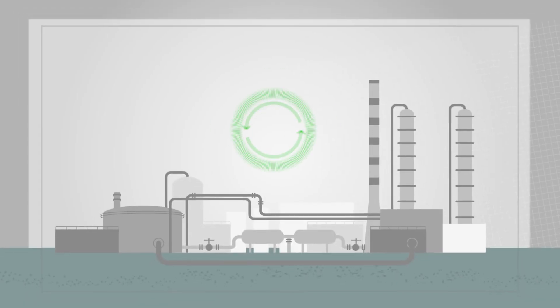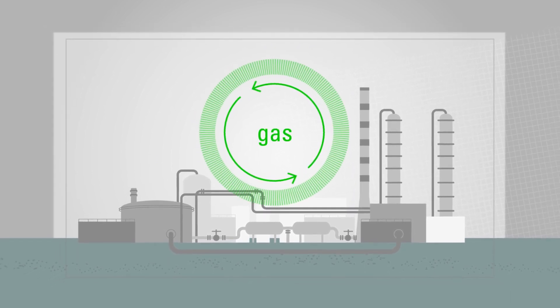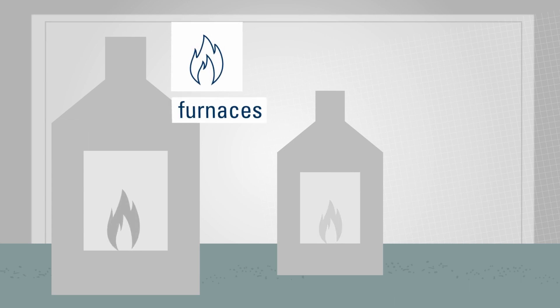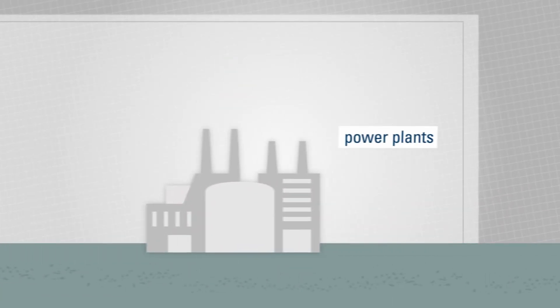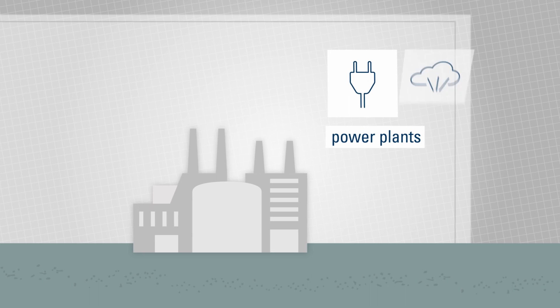The processes of a refinery produce surplus gas, and the goal is to use this gas sensibly. This is why the gas is fed into the plant's furnaces and into power plants to produce power or steam.